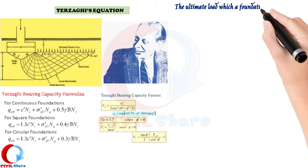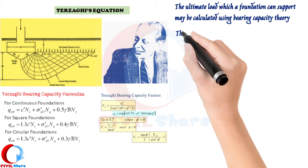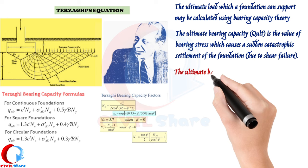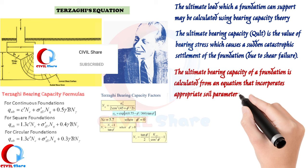The ultimate load which a foundation can support may be calculated using bearing capacity theory. The ultimate bearing capacity is the value of bearing stress which causes a sudden catastrophic settlement of the foundation due to shear failure. It is calculated from an equation that incorporates appropriate soil parameters.